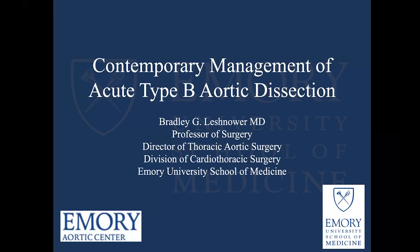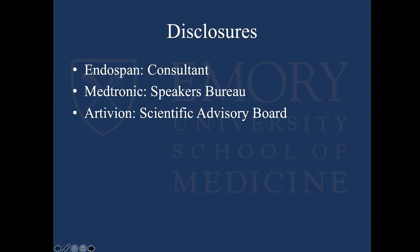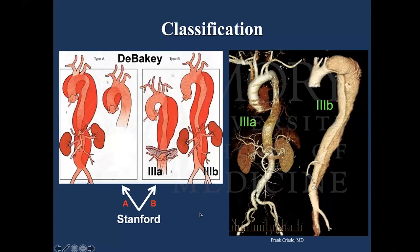A brief overview to refresh everyone's memory with respect to aortic dissection. There are two classification systems: the Stanford and the DeBakey. The Stanford is simpler — type A involves the ascending aorta, and type B does not. DeBakey is more detailed: DeBakey 1 involves the ascending, arch, and descending; DeBakey 2 just the ascending; DeBakey 3A begins at the left subclavian and ends just above the celiac; and 3B extends from the left subclavian past the celiac in various extents.